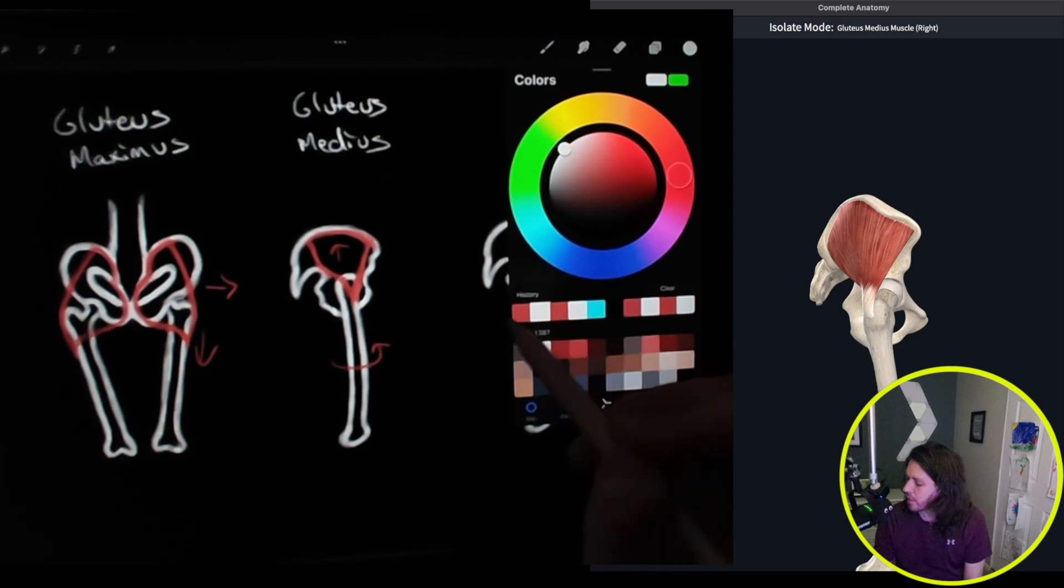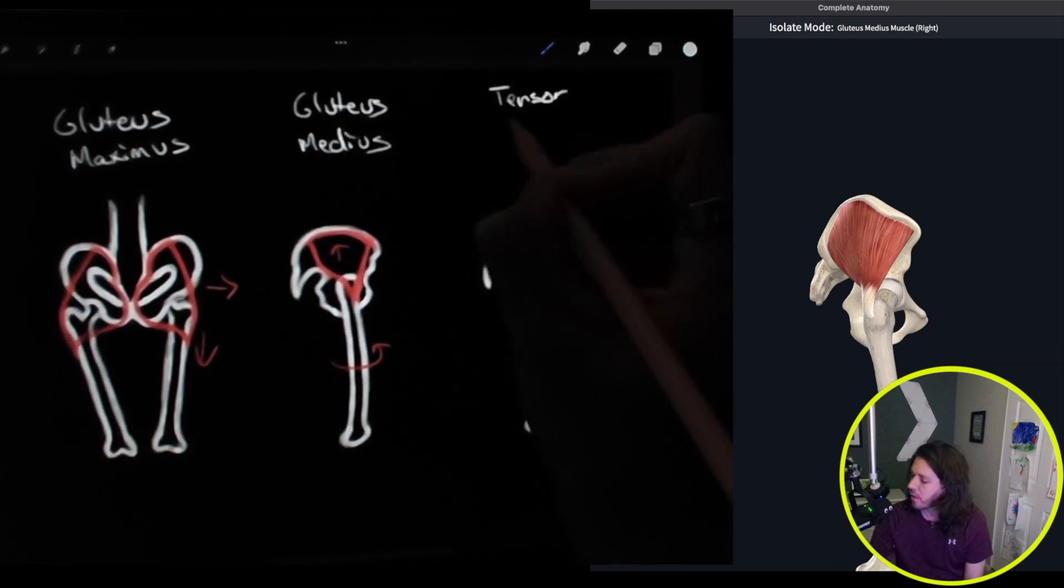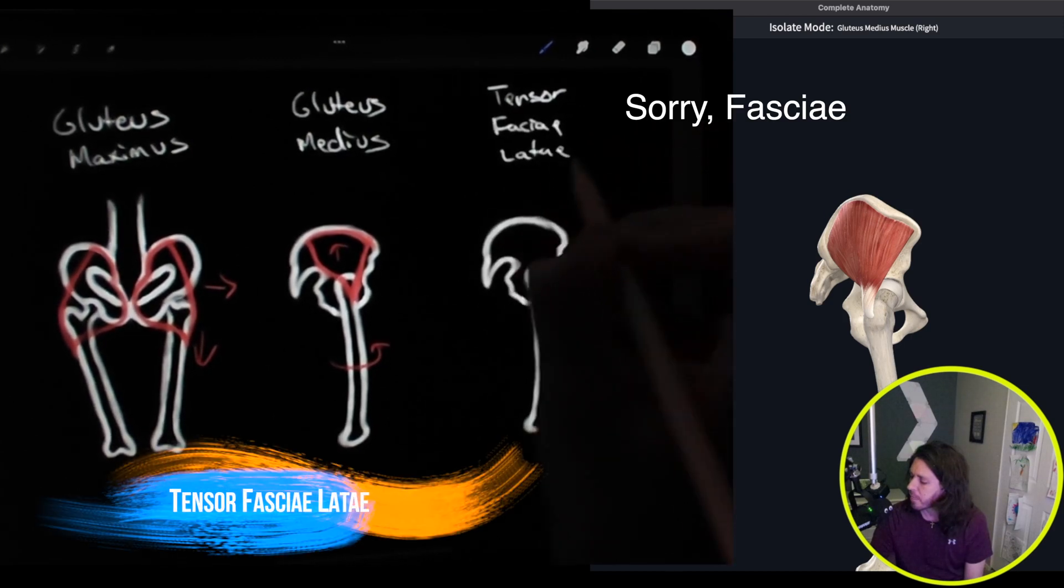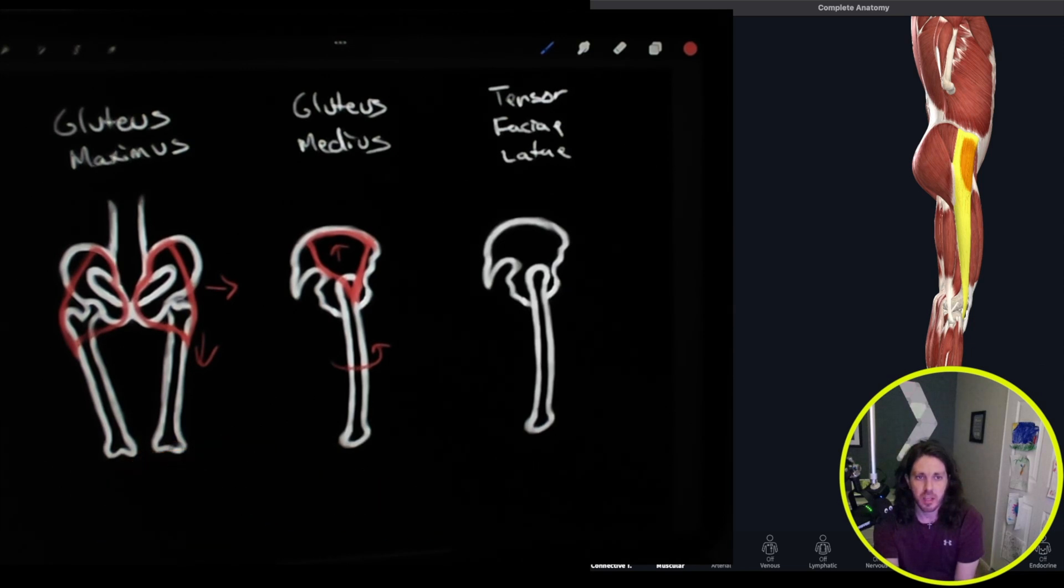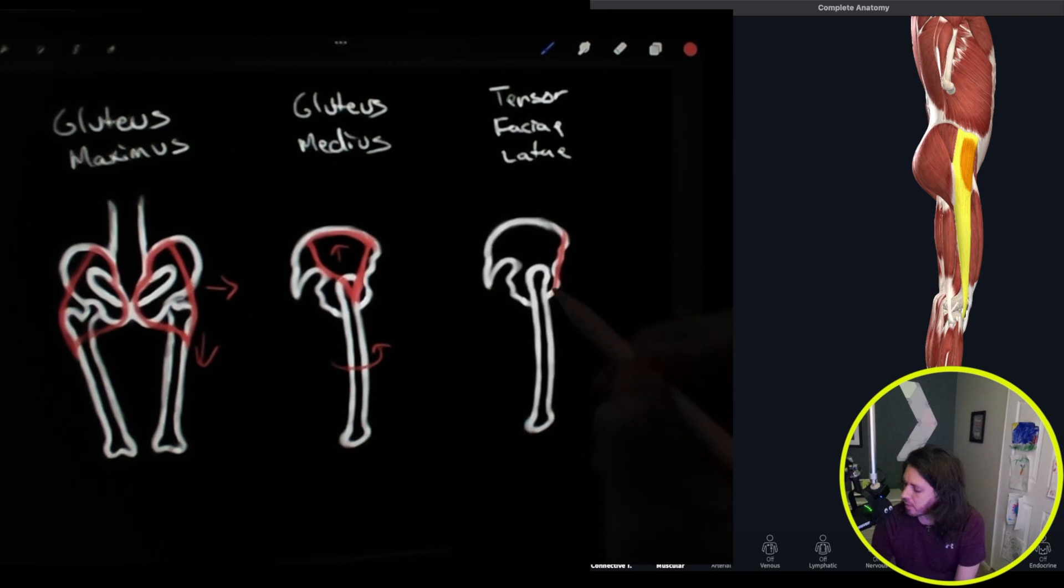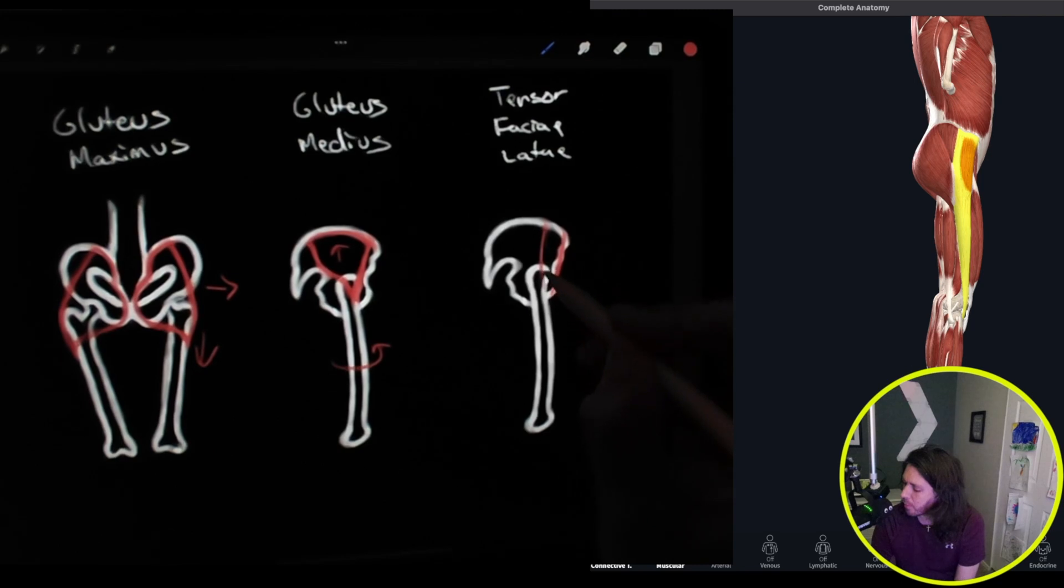Alright, now let's take a look at the last one here, and that is called the tensor fasciae latae. Now this one is part of the fascia called the IT band. So I'm going to draw this in a couple different colors. It starts here at the top of the ilium, comes right down along the pelvis. It doesn't attach to the femur, but it does cover that part of that femur bone, and it's kind of a curved triangle. It's a bit smaller muscle.